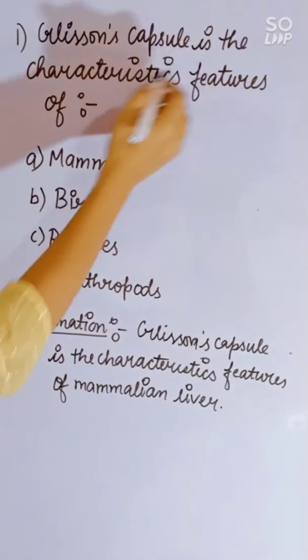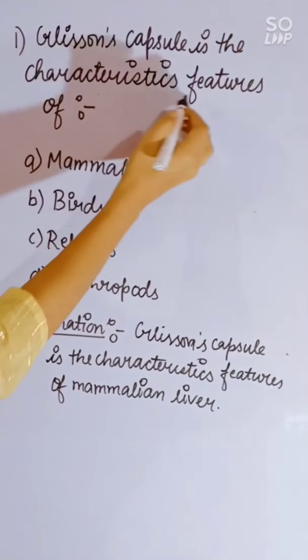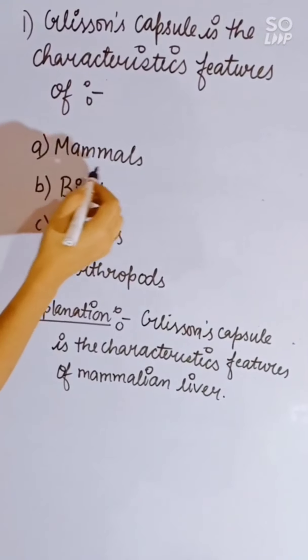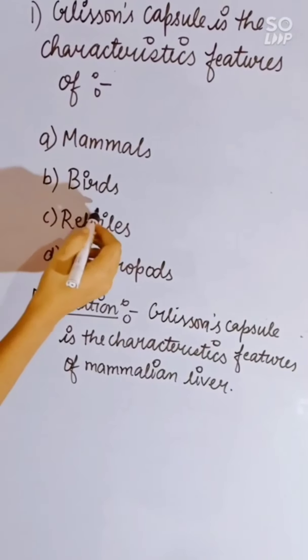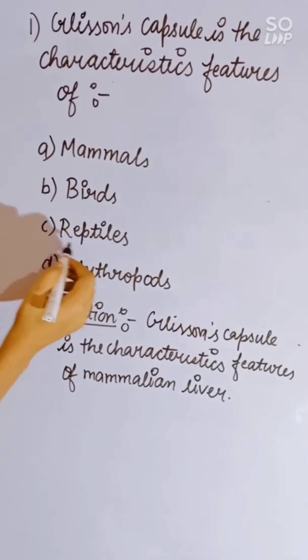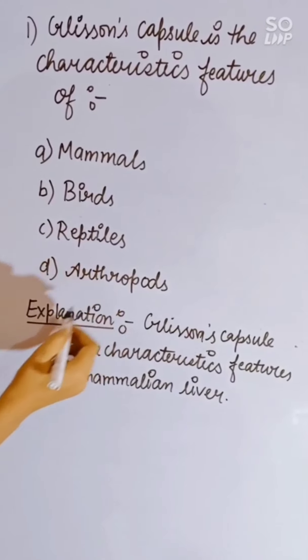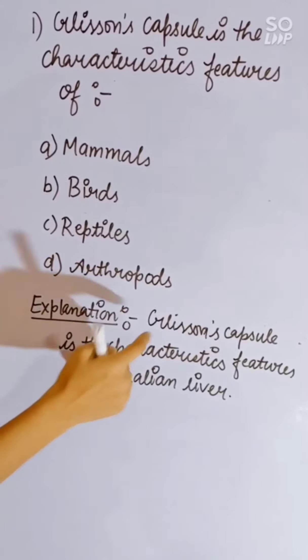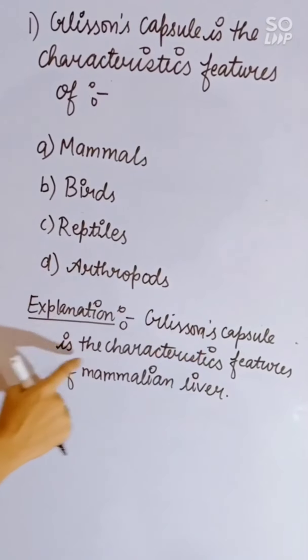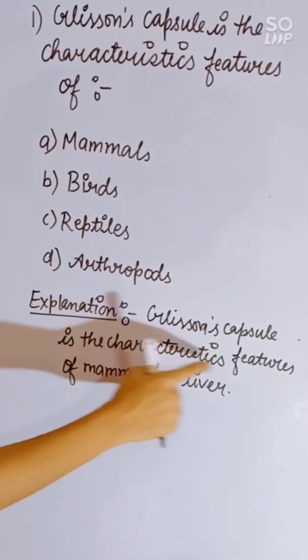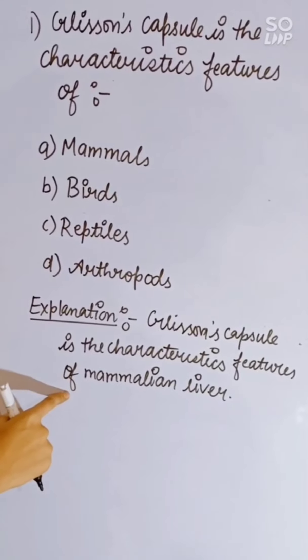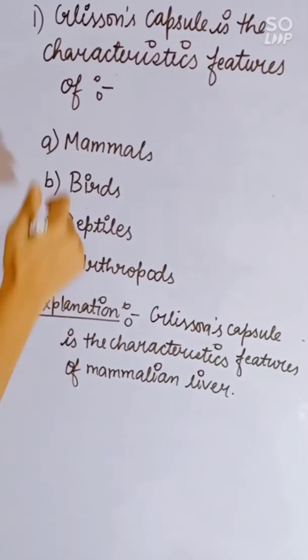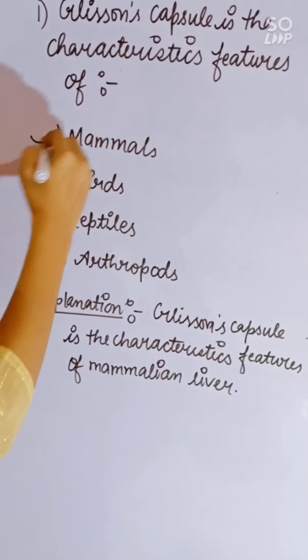Glisson's capsule is the characteristic feature of: mammals, birds, reptiles, or arthropods. Glisson's capsule is the characteristic feature of the mammalian liver. Correct answer is A, mammals.